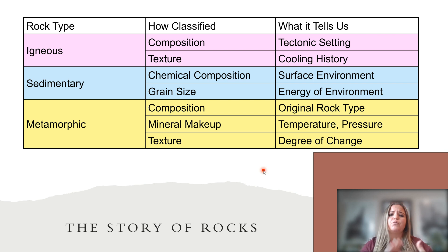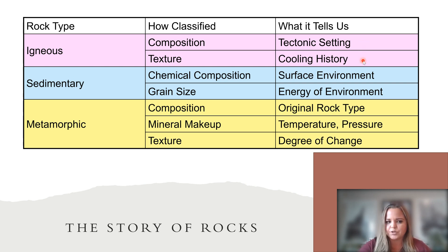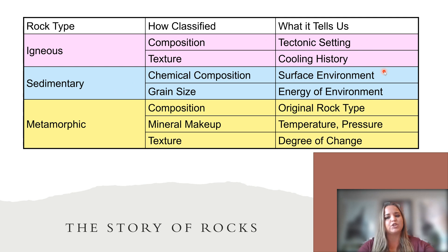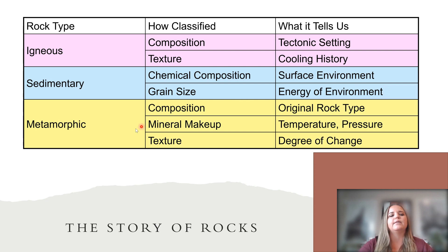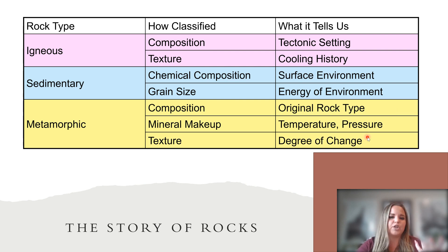Each of the different rocks tells us something about our environment. Igneous rocks tell us about tectonic setting and cooling history. Sedimentary rocks tell us about the surface and energy of the environment. Metamorphic rocks tell us about an original rock type, the pressure and temperature conditions at which it formed, and the degree of its change.